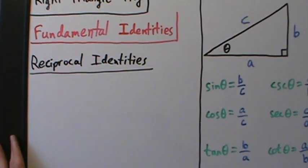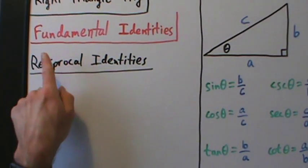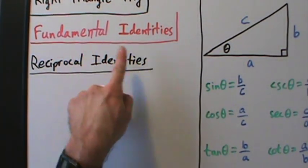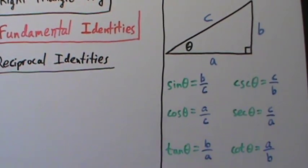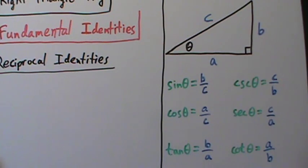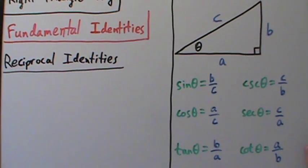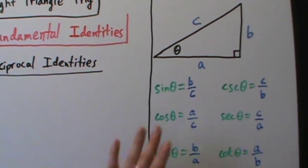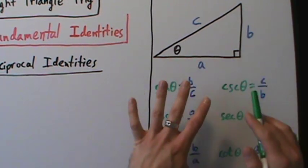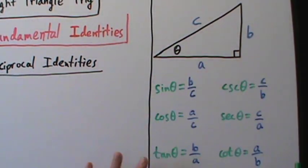Now what we want to do is talk about what are called the fundamental identities — basic fundamental relationships between these functions. We briefly talked about some of them in the previous video, but now let's talk about them in more detail. It's also easier to see now that we have a scaled down version of what we did in the last video.